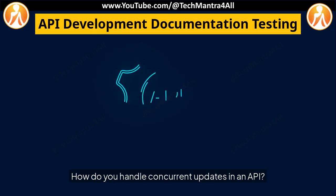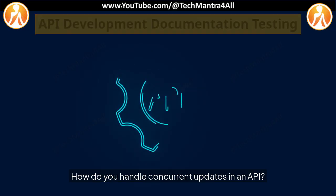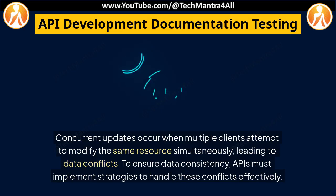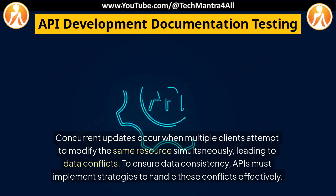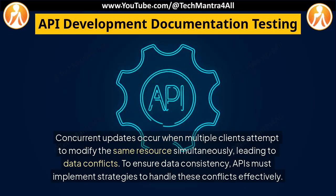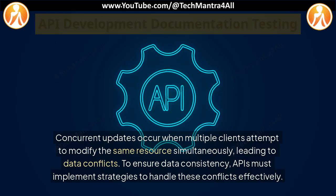How do you handle concurrent updates in an API? Concurrent updates occur when multiple clients attempt to modify the same resource simultaneously, leading to data conflicts. To ensure data consistency, APIs must implement strategies to handle these conflicts effectively.